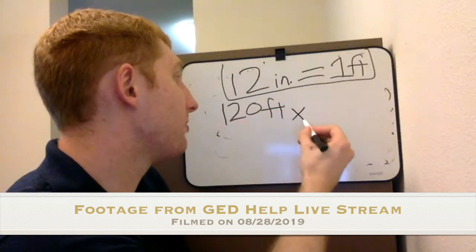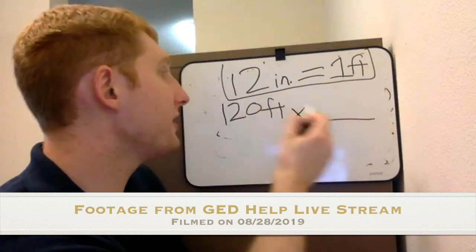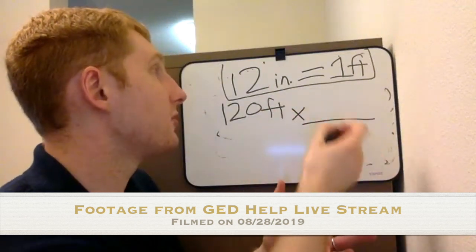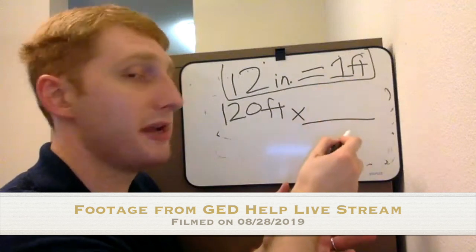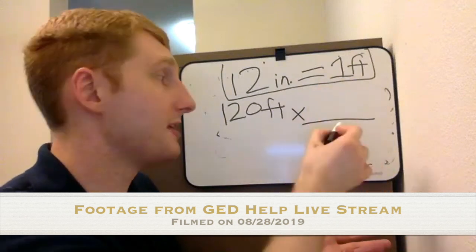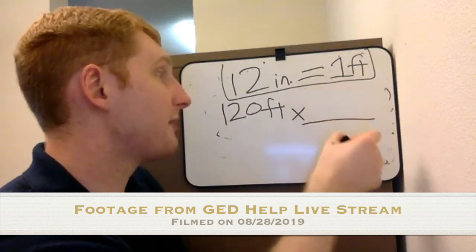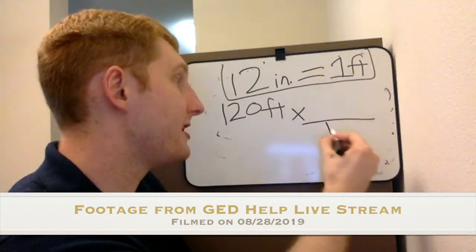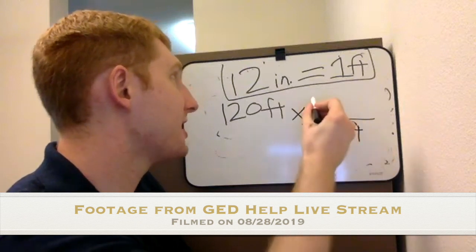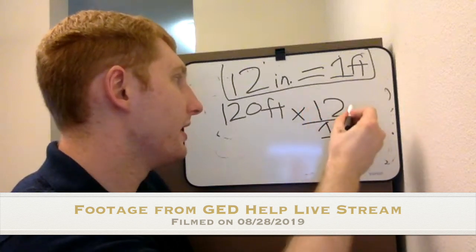So we've got 120 feet. We want to go to inches. So we want to multiply here. We want to set up a fraction and we want to set it up so that the feet are down here in the denominator. The denominator again is the bottom number in the fraction. The numerator is the top number. So we want to set up our conversion factors so that we've got feet down here and inches up here.